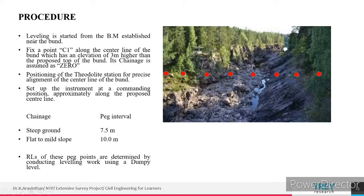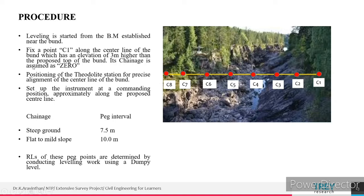Leveling is started from the benchmark established near the site. Fix a point C1 along the centerline of the bund, which has an elevation 3 meters higher than the proposed top of the bund — its chainage is assumed as zero. Equally split the length of the bund and fix pegs or arrows at each point. After that, conduct a chain survey to identify the length and equally distribute the points.